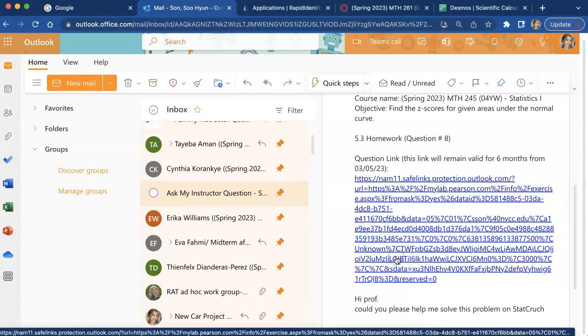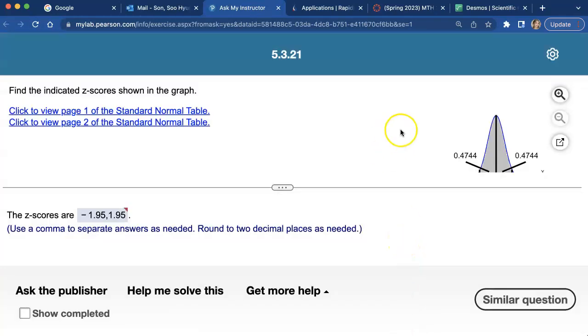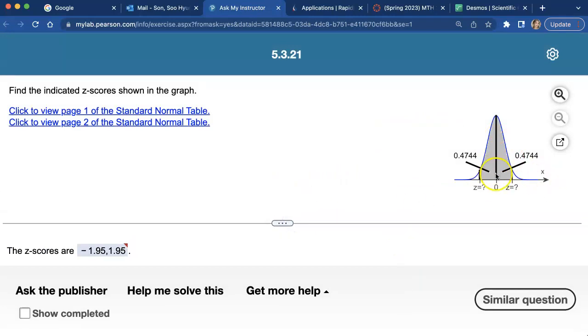This is homework 5.3 question number 8. Let's solve this one using StatCrunch. We're finding z-scores that will include this much area in the middle.